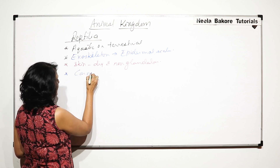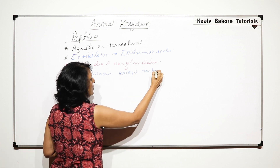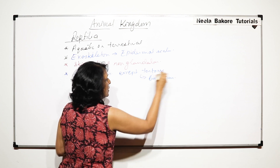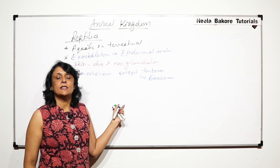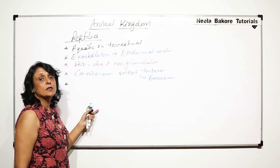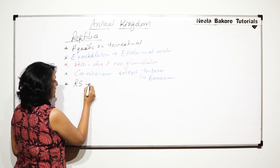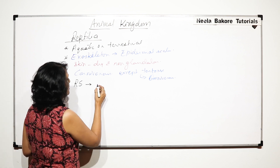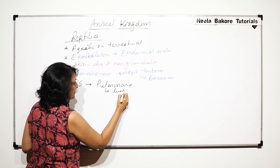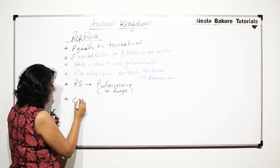Most of the reptiles are carnivores, except tortoises — tortoises are omnivores. So all reptiles we generally say are carnivores. Now let us talk about some important systems. In case of reptiles, respiration is always pulmonary, that means it is through lungs, so this is the only mode of respiration.